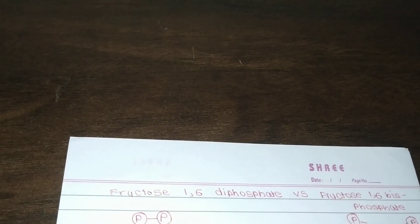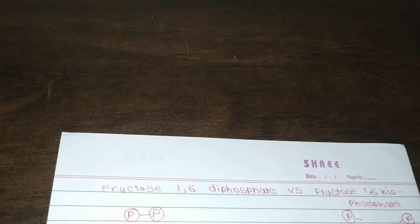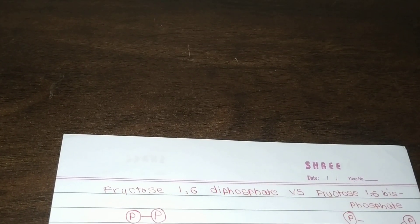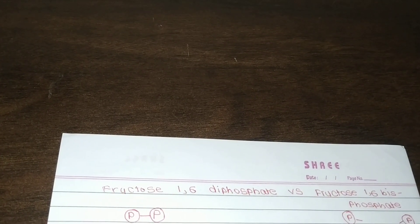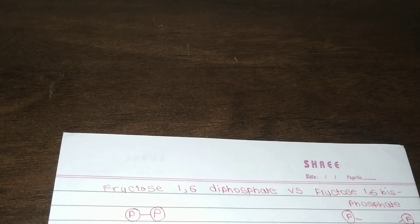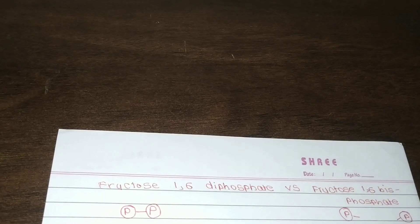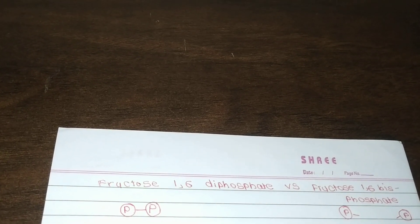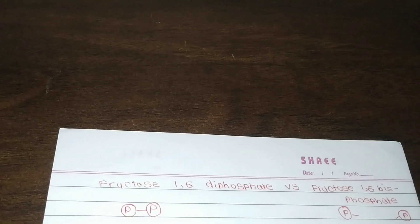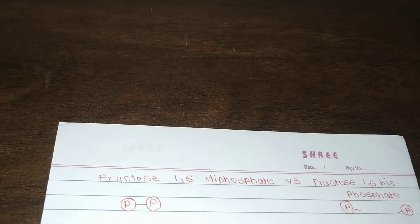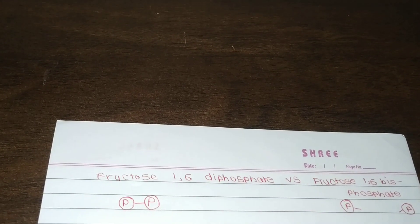If two phosphates are attached to each other, then it is called a diphosphate. If there are three phosphates attached to each other, then it is called a triphosphate.